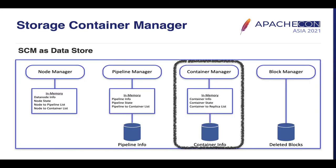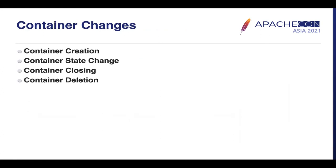Container Manager manages storage containers, which are the unit of replication in Ozone. It creates and manages containers; when a container becomes full, Container Manager closes it and maintains enough replicas. If a container becomes under-replicated, Container Manager re-replicates it on other data nodes. Container Manager stores container-level information in a container table in RocksDB, and in HA mode RATIS replicates all container-related information across all SCMs. Container-level changes include container creation, state change, closing, and deletion.